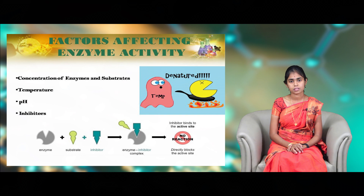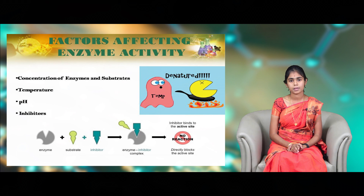Coming to temperature — most enzymes are active at normal temperature, which is the optimal temperature. If the temperature increases or decreases beyond the optimal temperature, that may affect the activity of an enzyme. Next is pH, which is similar to temperature — it has some optimal pH. Below or above the optimal pH may lead to the risk of enzyme degradation and also slows down the enzyme activity.